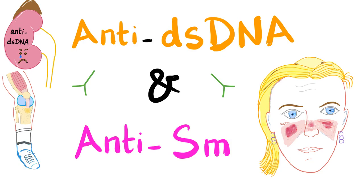Hey guys, it's Medicosis Perfectionalis, where medicine makes perfect sense. Continuing our rheumatology series — in previous videos we have talked about anti-double-stranded DNA antibodies and anti-Smith antibodies, both prevalent in lupus patients. Look at this malar butterfly rash: on both cheeks, can include the nose, but spares the nasolabial folds.